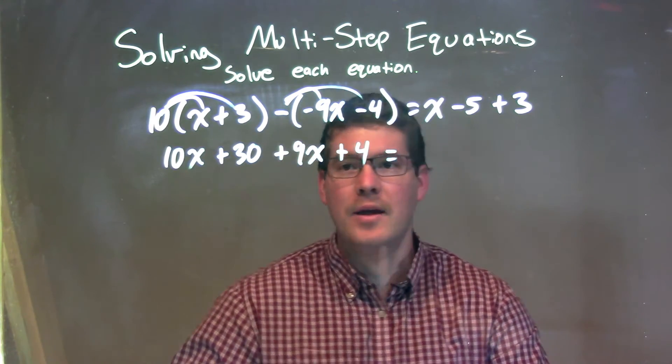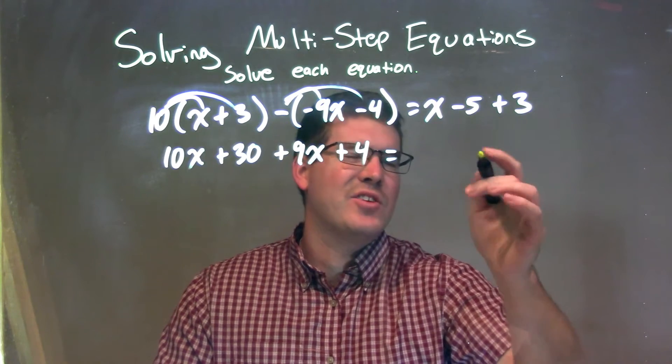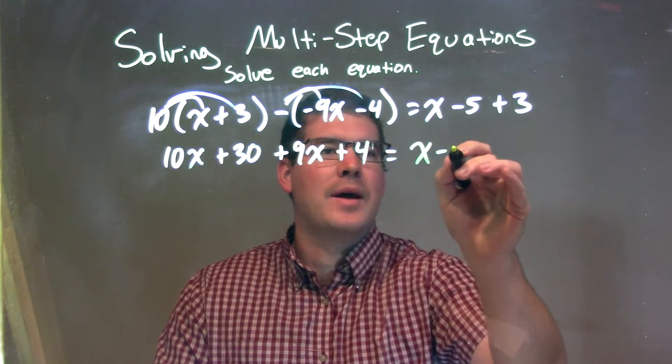On the right-hand side, we can combine our like terms. Negative 5 plus 3 is negative 2, so we have x minus 2.